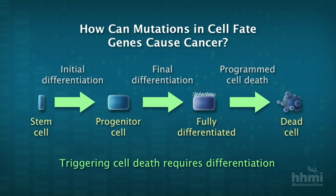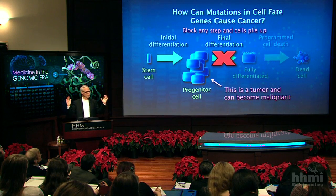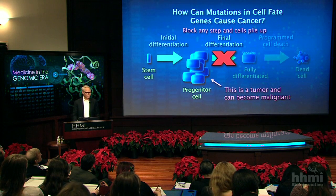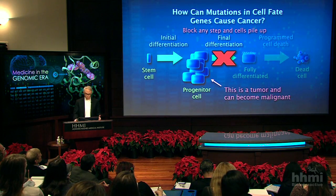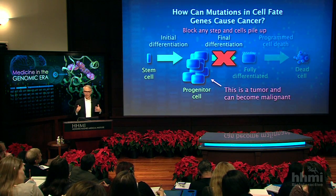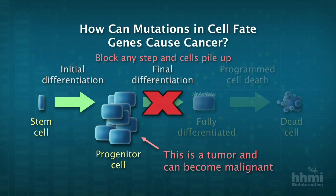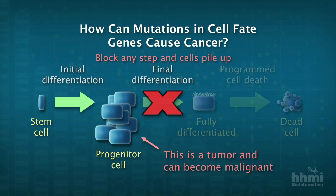Eventually those mature, fully differentiated cells tend to die. But how does a mutation in a gene that regulates that differentiation process cause cancer? It doesn't change the proliferation rate of the cell — it just blocks the ability of the cell to undergo one of those steps in differentiation. So if there's a block, there's a pileup of cells trying to get through that block, and that pileup of cells can form a tumor.